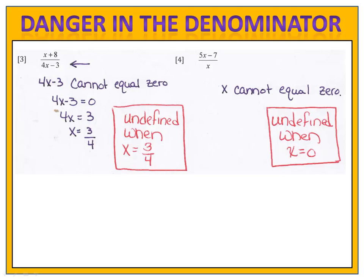In exercise 3, we see there's danger in the denominator because 4x minus 3 cannot equal 0. We find the value that would cause that to equal 0, and we get x equals 3 fourths. In other words, if we put the number 3 fourths in for x, we have a fraction with 0 in the denominator. In example 4, x cannot be 0. If x is 0, we have something over 0, and we cannot have the denominator equal to 0.